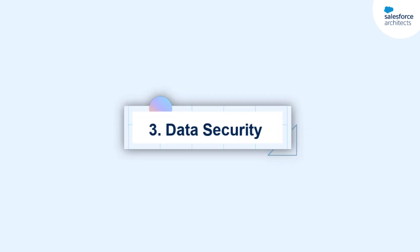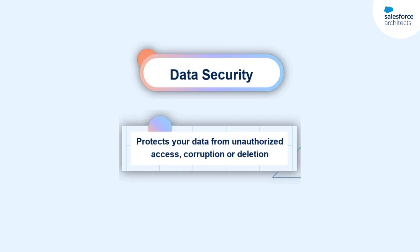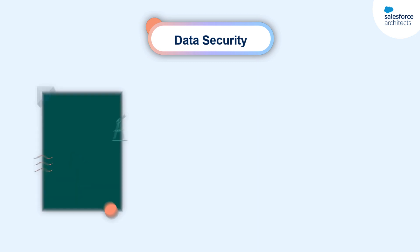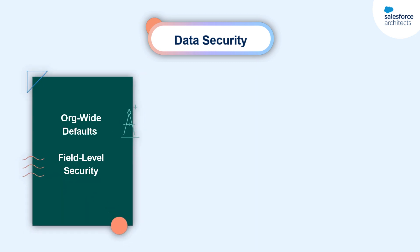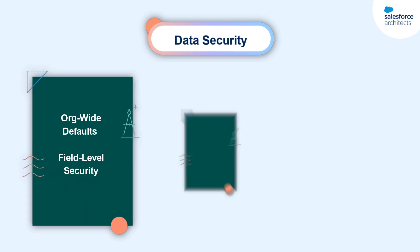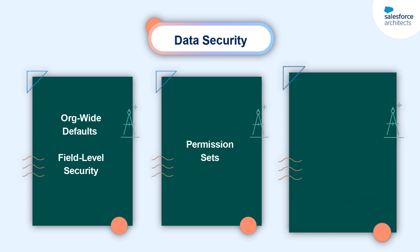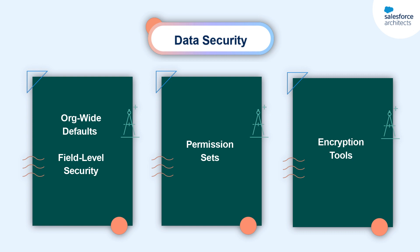The final consideration for a secure solution is data security. Data security is the practice of protecting your data from unauthorized access, corruption, or unintended deletion. As an architect, you can improve data security by using a combination of org-wide defaults and field-level security to secure access to data, permission sets to open up access to persona-based groups of users, and defining the need for encryption tools like Salesforce Shield and Apex crypto class methods.